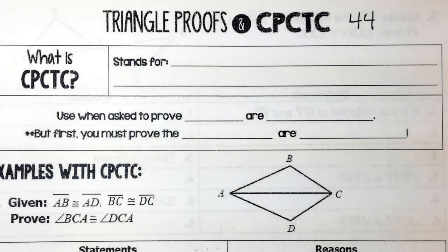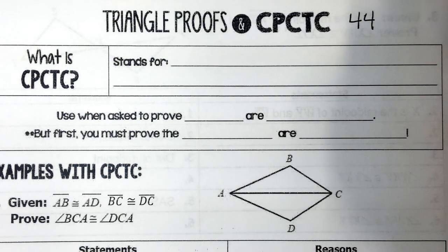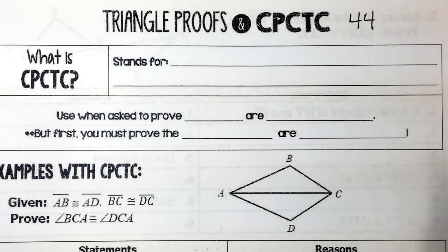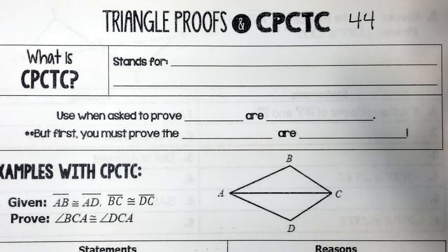Alright, so this is triangle proofs and CPCTC. Before we started I asked you to look up CPCTC — some of you got that already. CPCTC: you can only make that statement after you call two triangles congruent by some kind of congruency rule. It's an additional piece of information we add onto our proof — the proofs aren't changing at all.